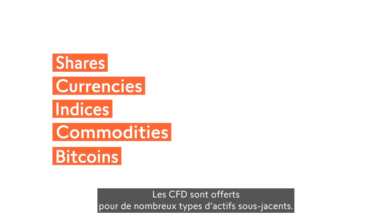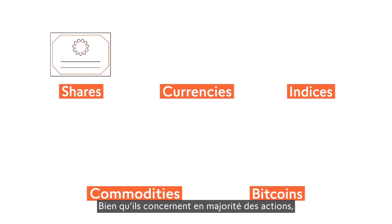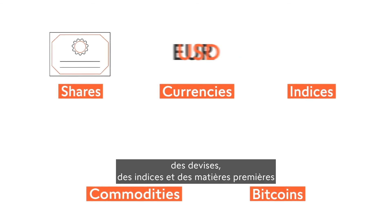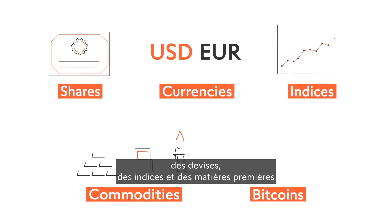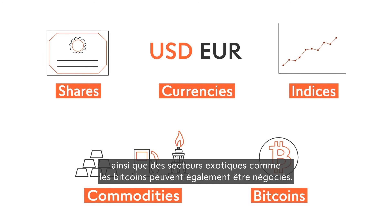CFDs are offered for many different kinds of underlying assets. While shares are the most common, currencies, indices and commodities, as well as exotic areas such as bitcoins, can be traded.